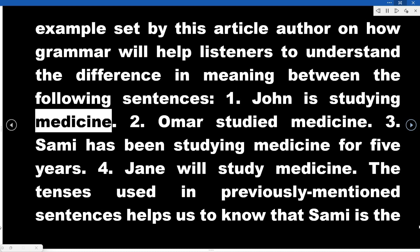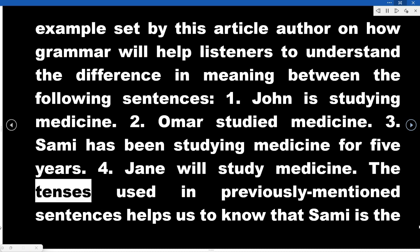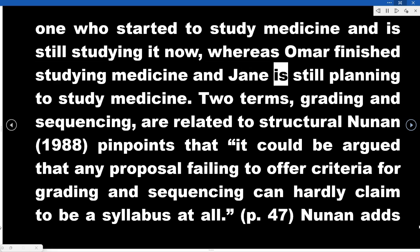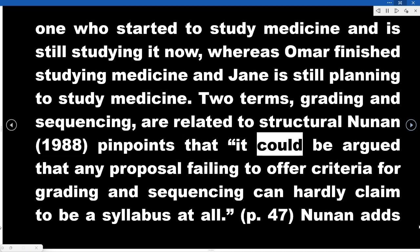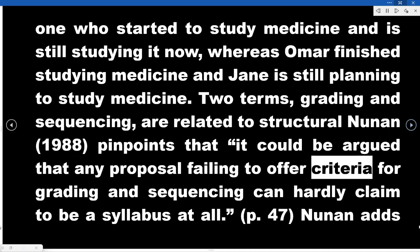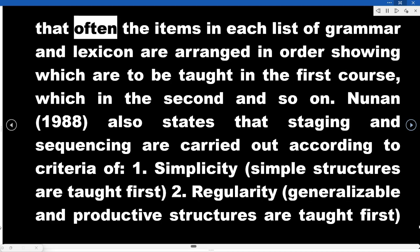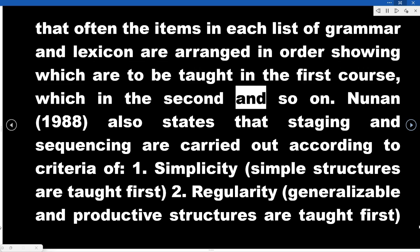For example, consider these sentences: (1) John is studying medicine. (2) Omar studied medicine. (3) Sami has been studying medicine for five years. (4) Jain will study medicine. The tenses used in these sentences help us know that Sami started studying medicine and is still studying it now, whereas Omar finished studying medicine and Jain is still planning to study. Two terms related to structural syllabuses are grading and sequencing. Nunan pinpoints that any proposal failing to offer criteria for grading and sequencing can hardly claim to be a syllabus at all.